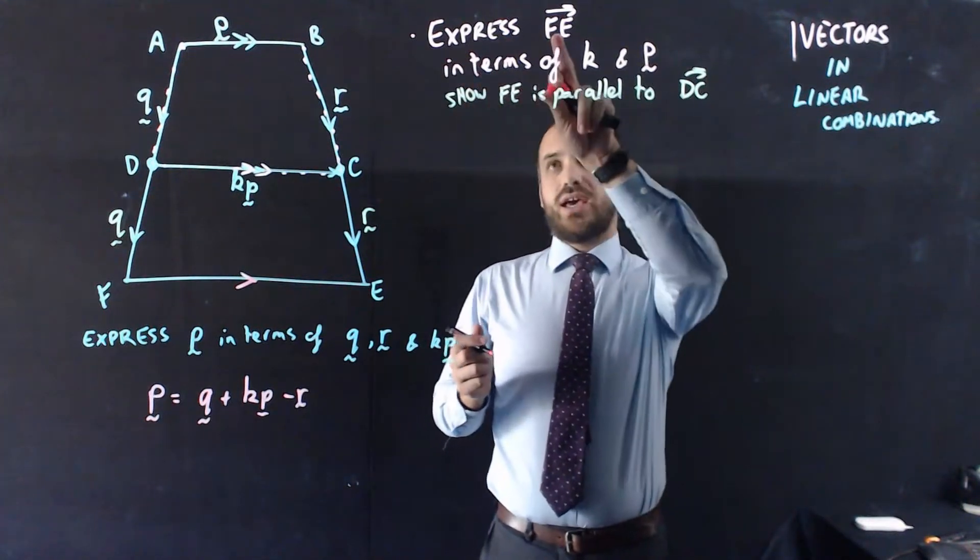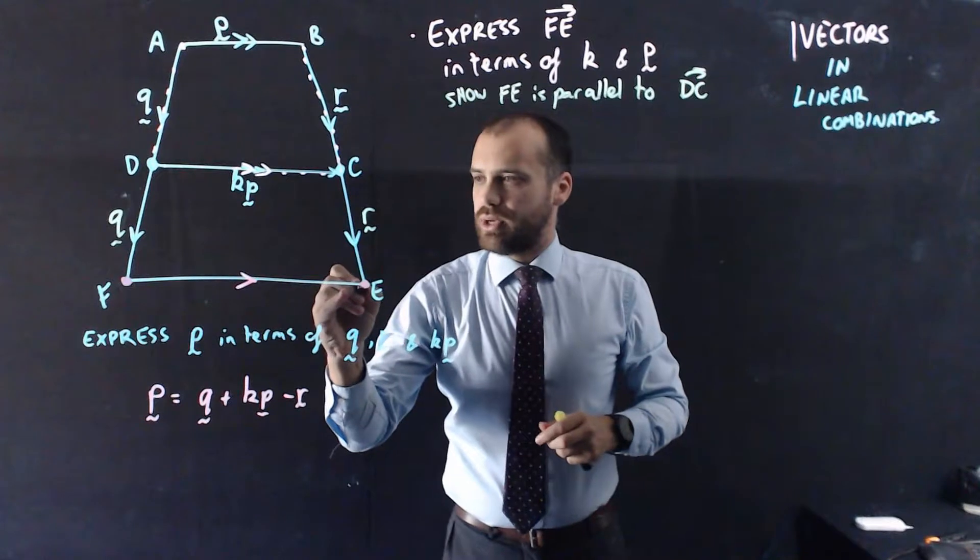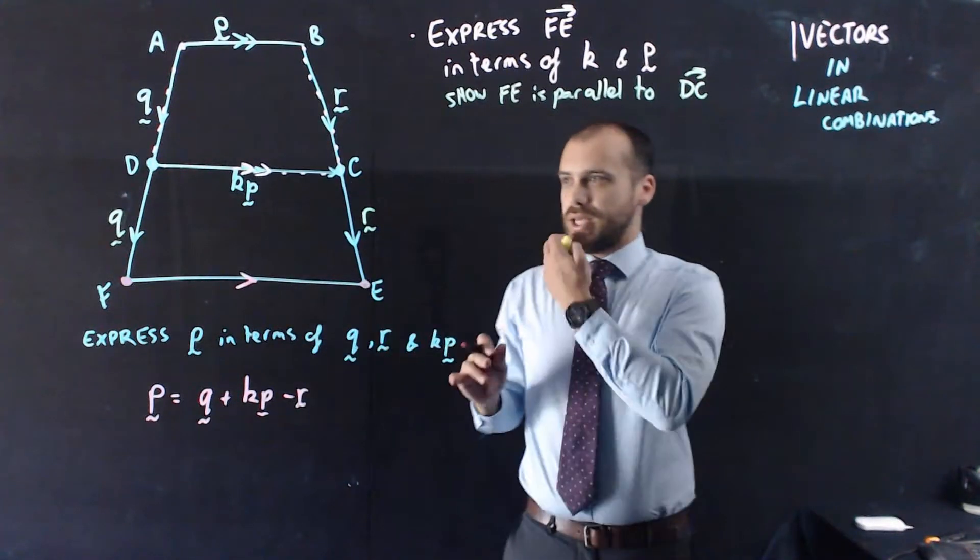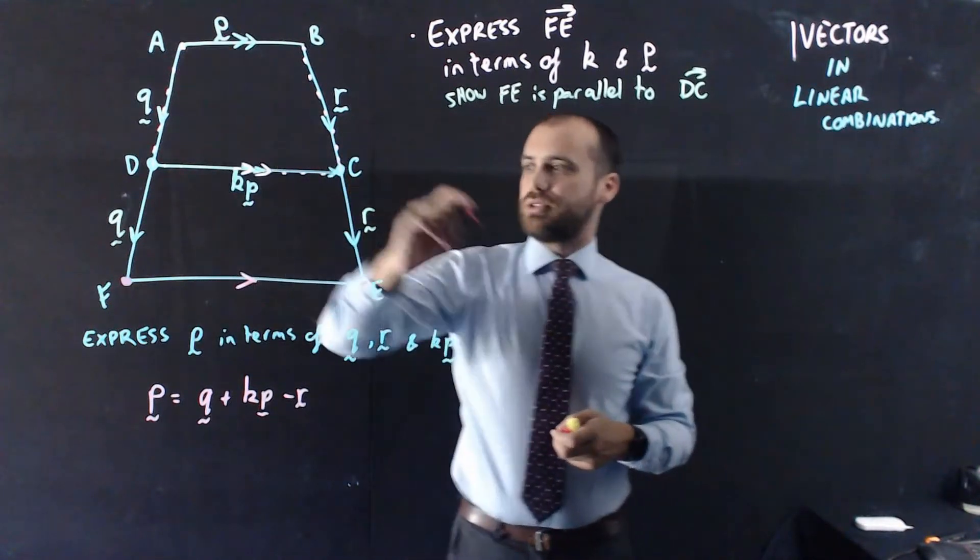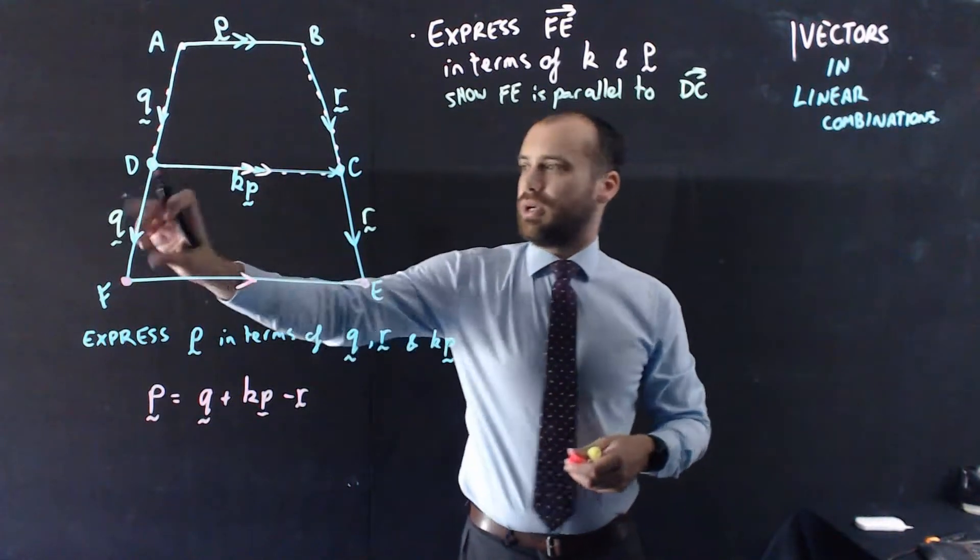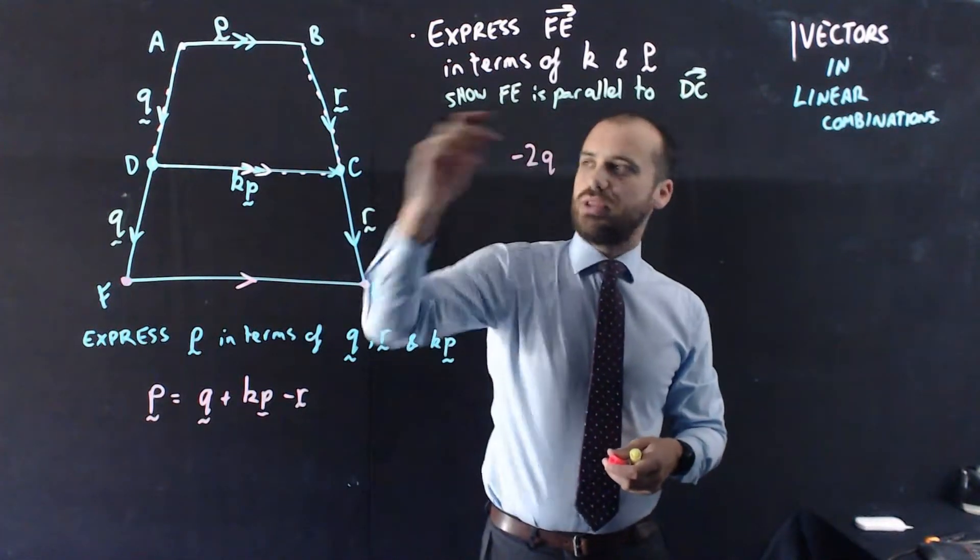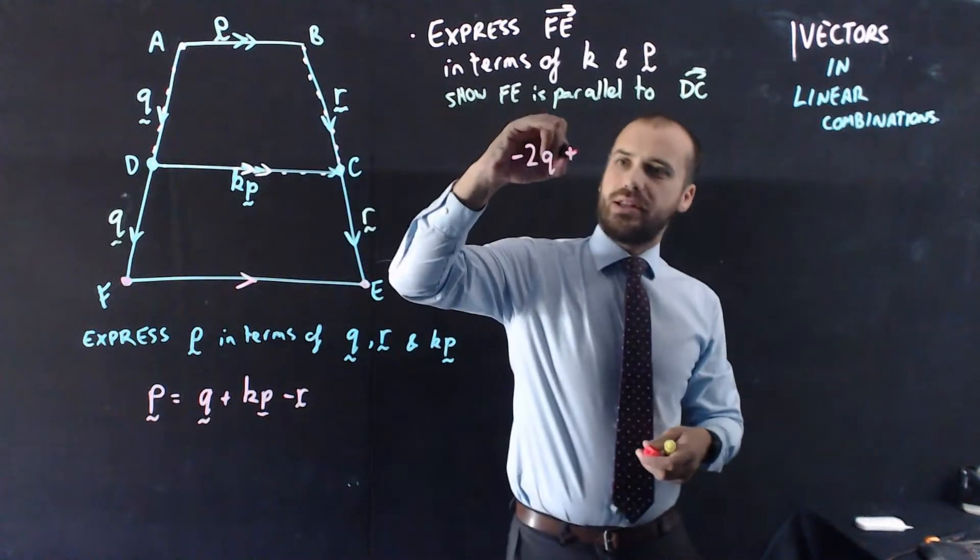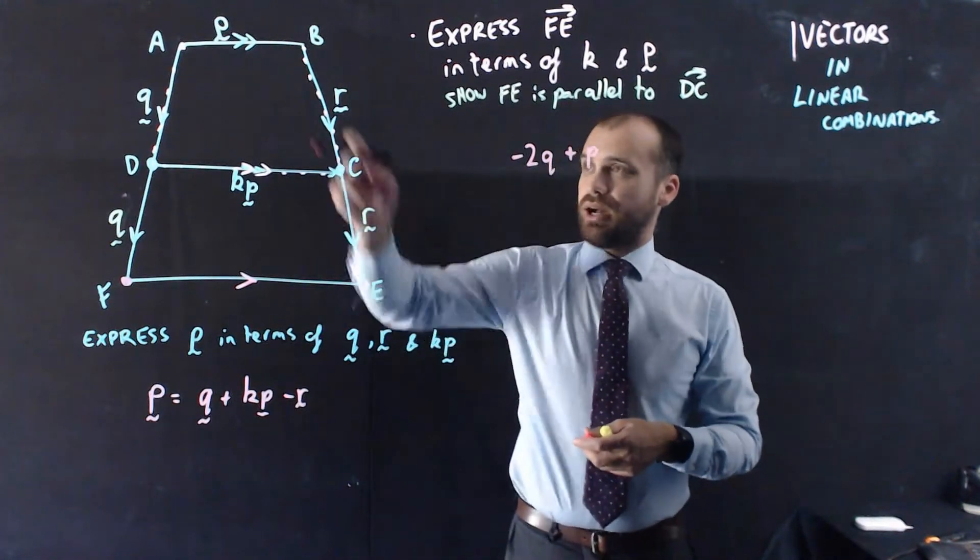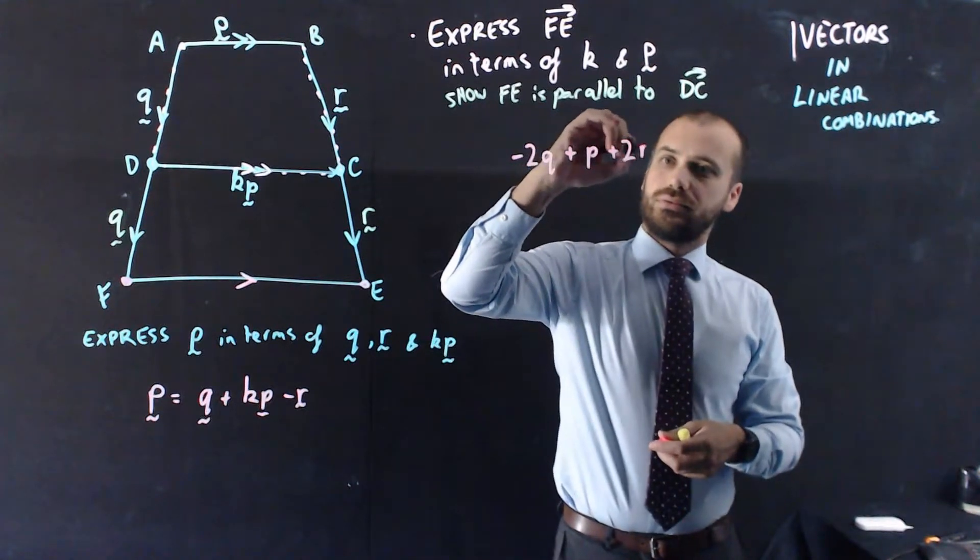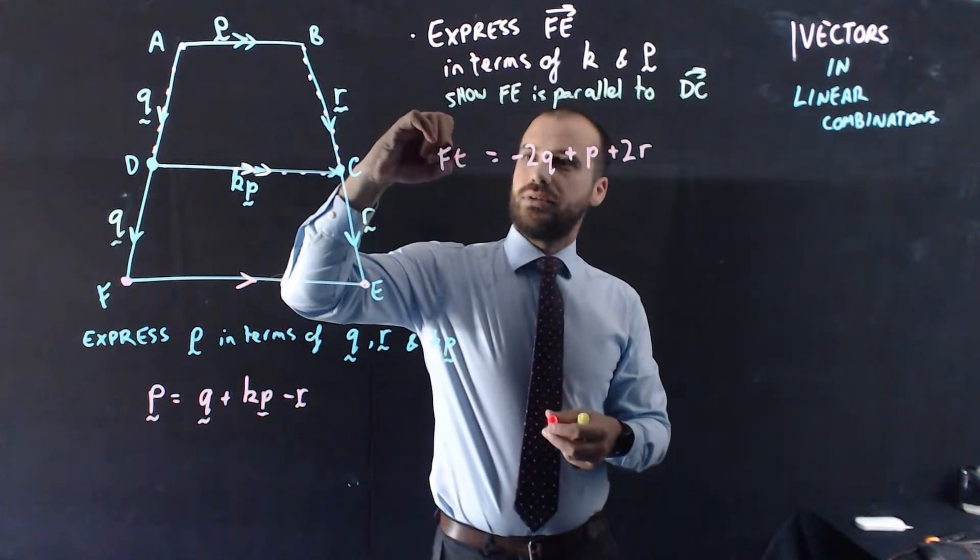Alright, so if we want to find, express FE in terms of the rest of this stuff, we're starting from the point F and we need to get to the point E in some other way. Alright, so I'm going to get there by saying, I'm going to move from there all the way up to the top. So I'm going to say, well I can't use Q, I've got to use negative Q, because I've got to spin it around, because I want to start here and move upwards. So negative 2Q, that'll get me up to here. And then I'm going to add P to that. And then I'm going to add 2R, because R is going in that direction. And I can say that negative 2Q plus P plus 2R is equal to the vector FE.